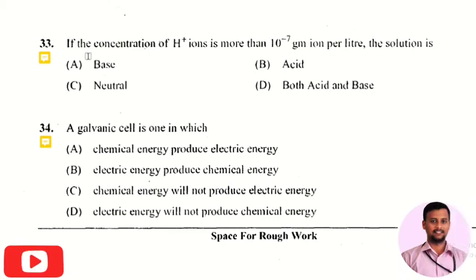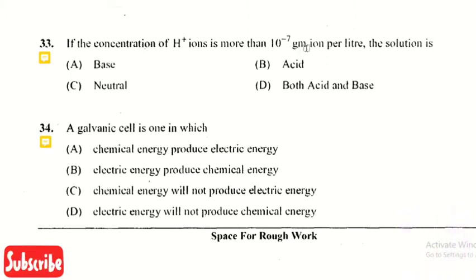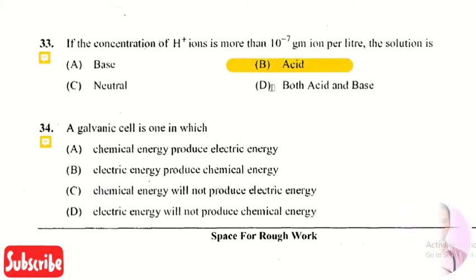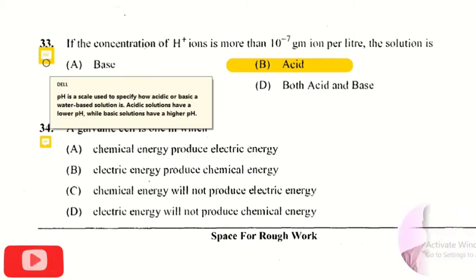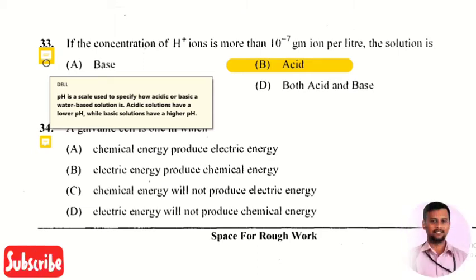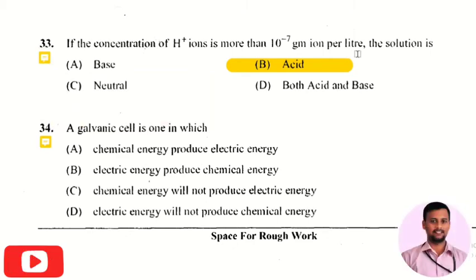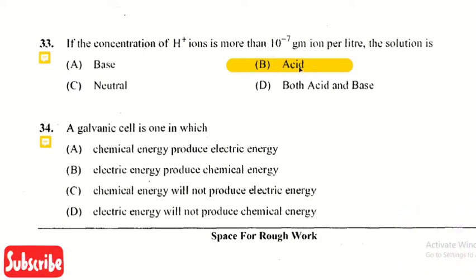The next question is: if the concentration of H+ ions is more than 10 raised to minus 7 grams ion per liter, the solution is — the right answer is option 2, that is the solution will be acidic. pH is a scale used to specify how acidic or basic a water-based solution is. Acidic solutions have a lower pH value and basic solutions have a higher pH value. Since the H+ concentration is higher here, the solution is acidic.